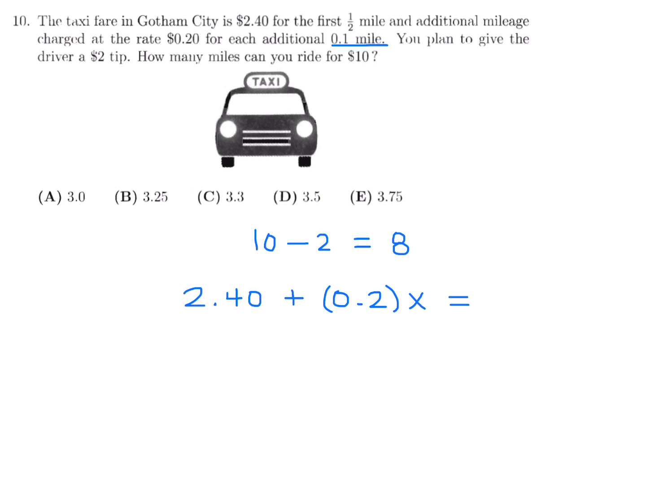And this total must equal this $8 that I can spend on the taxi fare. So doing this math, I get 0.2X is equal to $5.60. And then dividing through by 0.2, I get X is equal to 28. So X equals 28 represents the number of 0.1 mile segments that I've traveled. So the total distance that I traveled was that first half mile that I paid $2.40 for, plus 28 times 0.1 mile. And this looks like, in terms of decimal, 0.5 plus 2.8, and that is 3.3. So number 10, the answer is C.